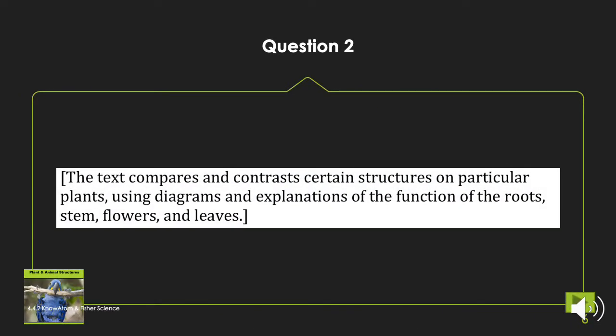The text compares and contrasts certain structures on particular plants using diagrams and explanations of the function of the roots, stem, flowers, and leaves. So they gave us several different examples of plants and we're focusing mostly on those four structures: roots, stem, the flowers, and the leaves and how all of those help the plant grow and survive.